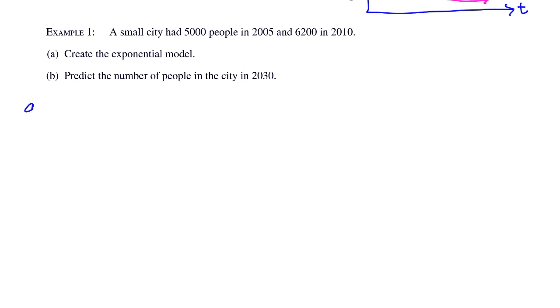So for part a, the model is A equals A naught e to the kt. We know that the initial amount is going to be 5,000.